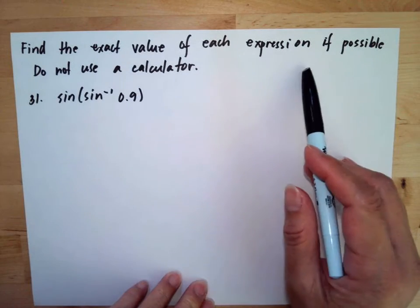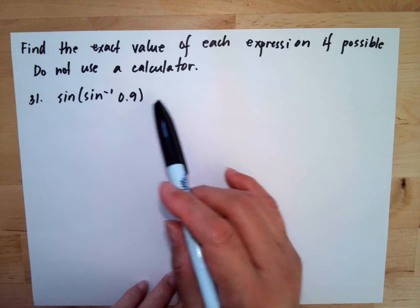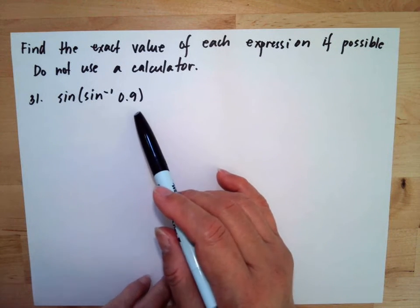Find the exact value of each expression if possible. Do not use a calculator. So we have sin(sin^-1(0.9)).